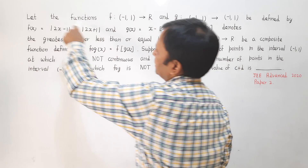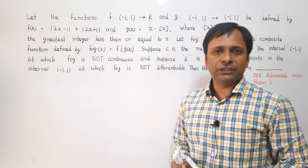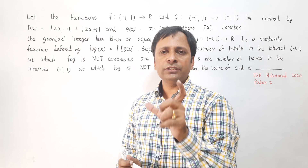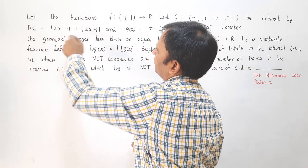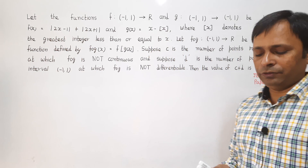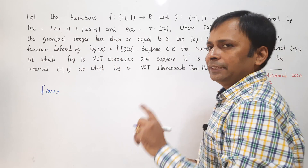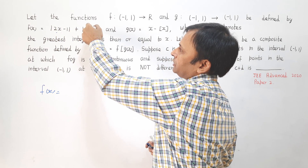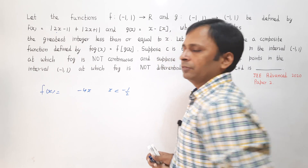To start, let's look at f(x) which is the sum of two modulus expressions. The modulus expression changes its definition when what is inside the mod becomes zero. So the critical points are x = 1/2 and x = −1/2. When x < −1/2, f(x) becomes −(2x − 1) − (2x + 1) = −4x.